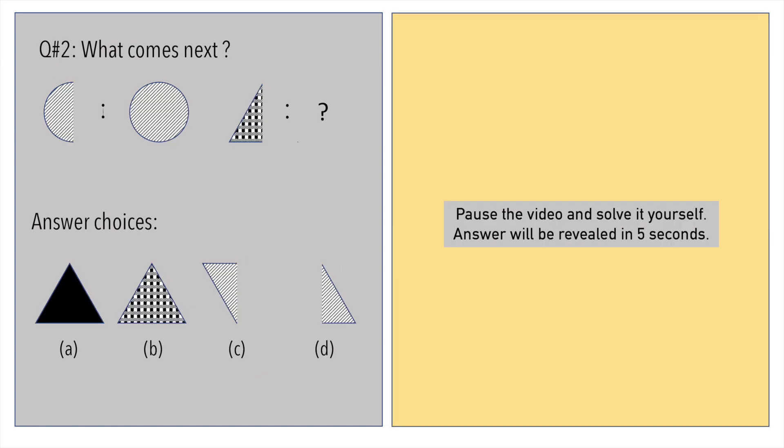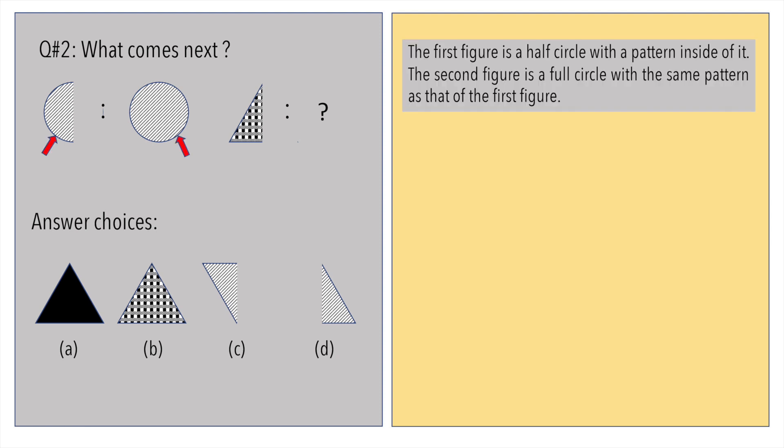What comes next in the series of patterns? The first figure is a half circle. It has a pattern comprising slant lines inside of it. The second figure is a full circle with the exact same pattern as the first figure.